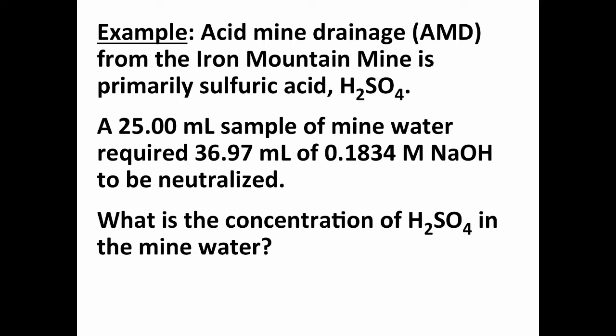The Iron Mountain mine was infamous for having the worst water in the world. The reason it was designated the worst water in the world was because it was so concentrated in sulfuric acid.